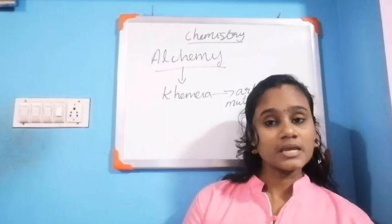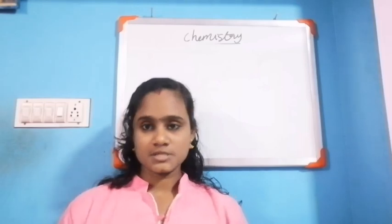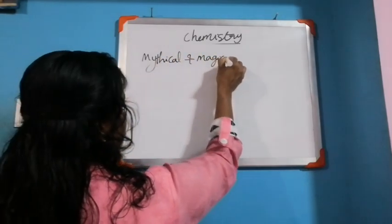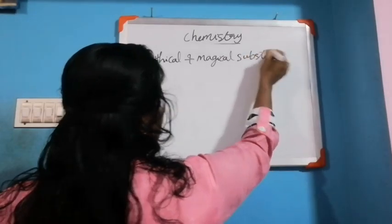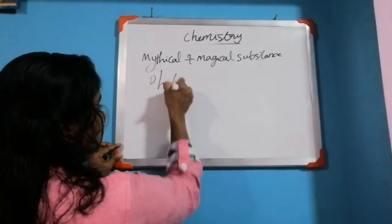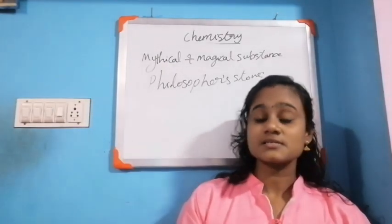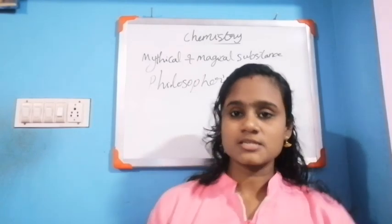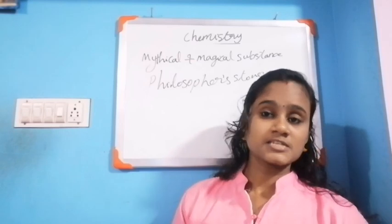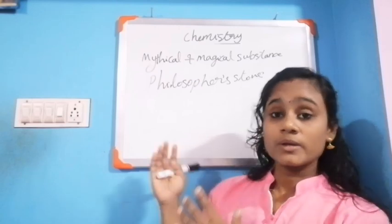The goal of alchemy was to find a mythical and magical substance. This mythical and magical substance is called the philosopher's stone, which has magical power.